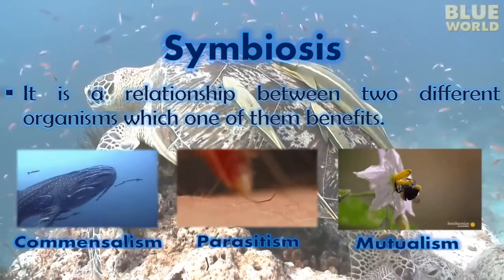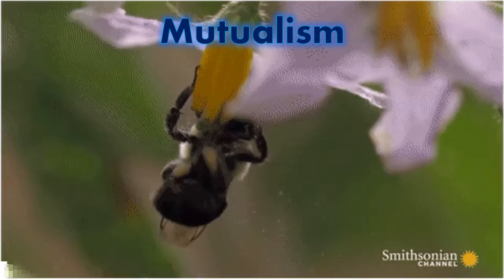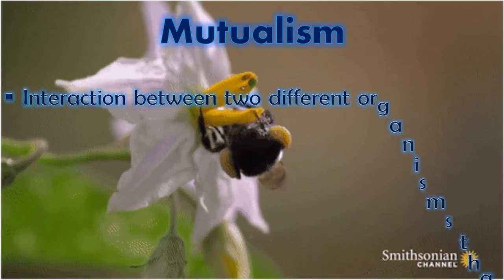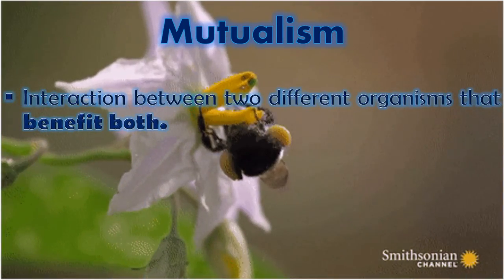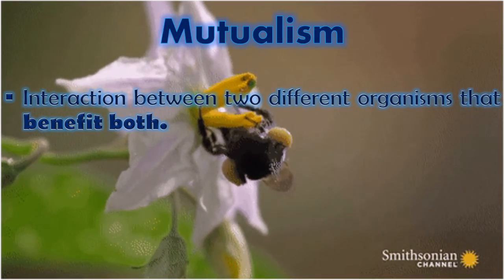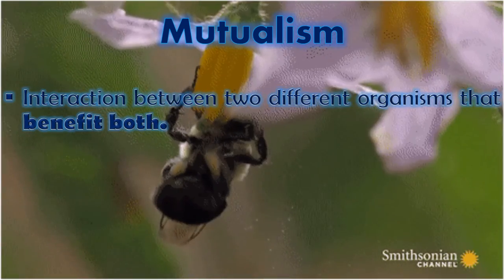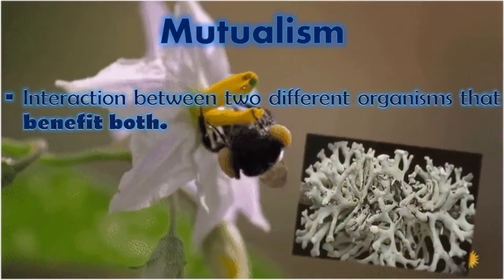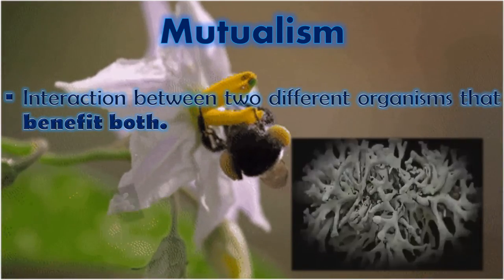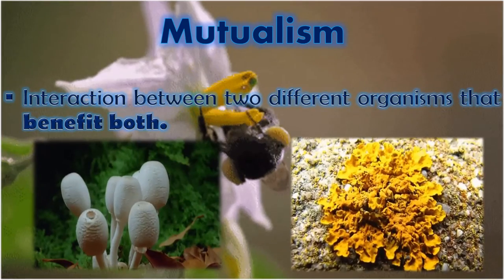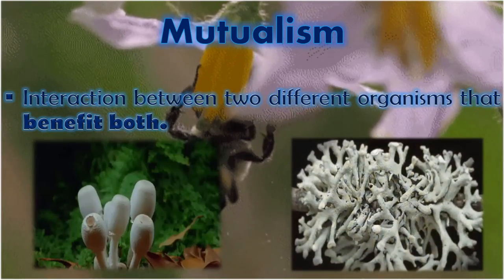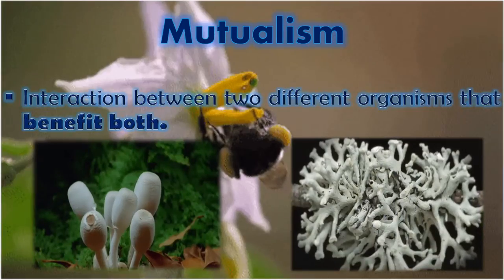Next is mutualism. Mutualism is an interaction between two different organisms that benefits both. These organisms have a give and take system. For example, lichen, which consists of fungi and algae living together — the algae produce food and the fungi provide shelter.